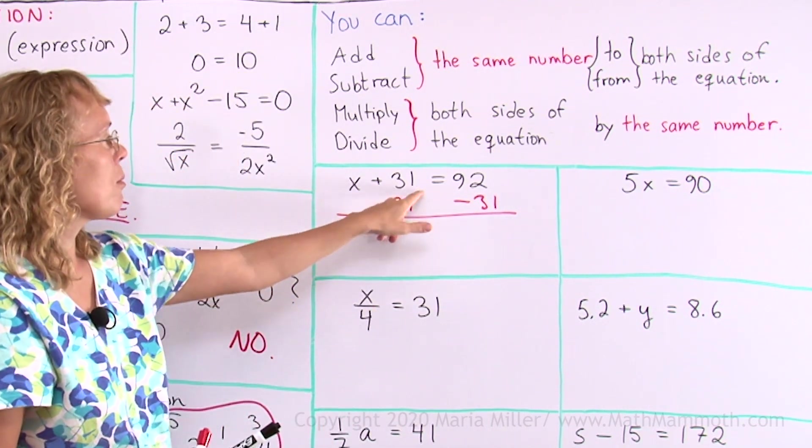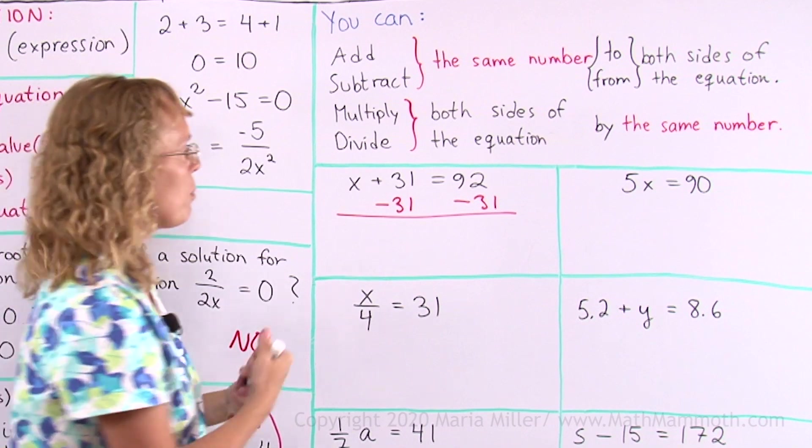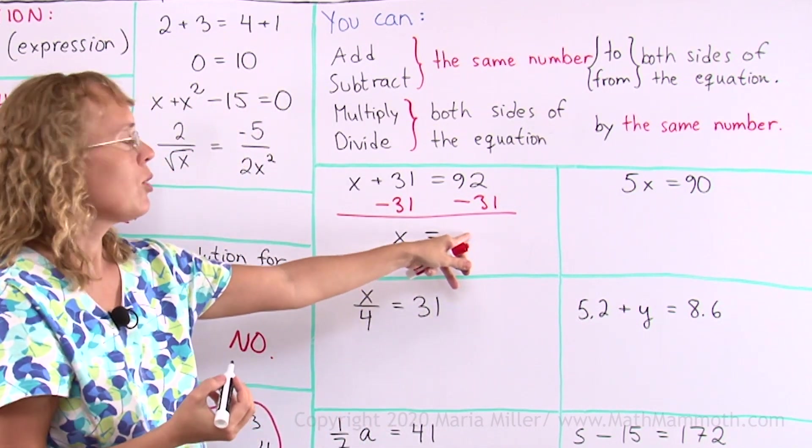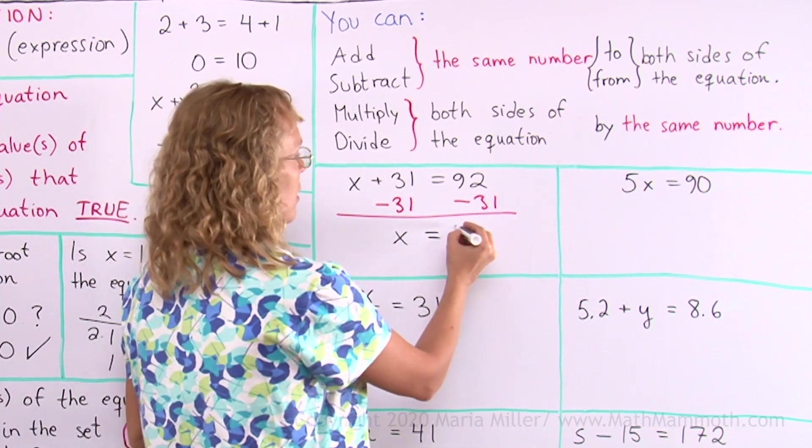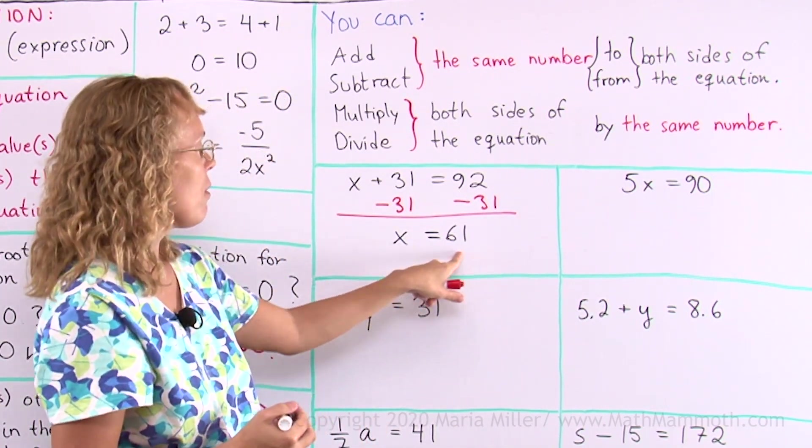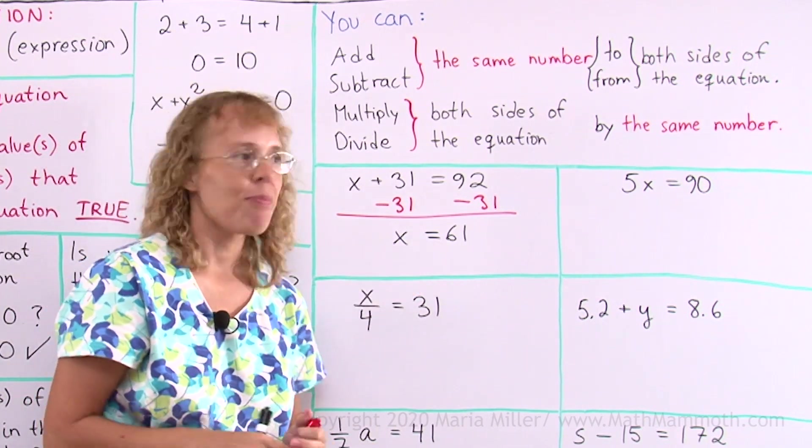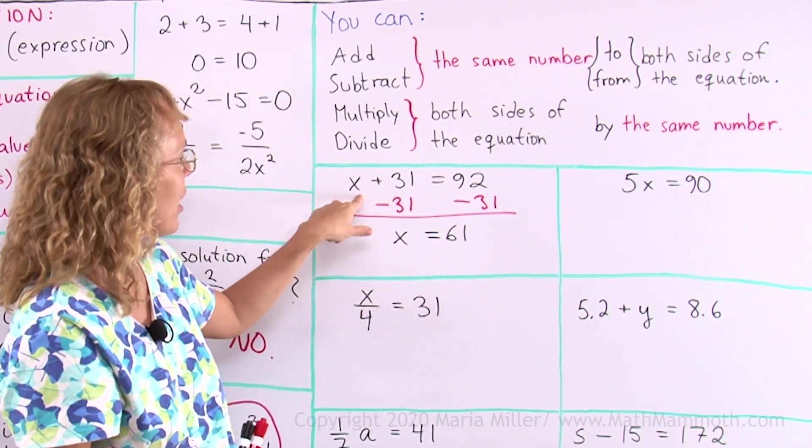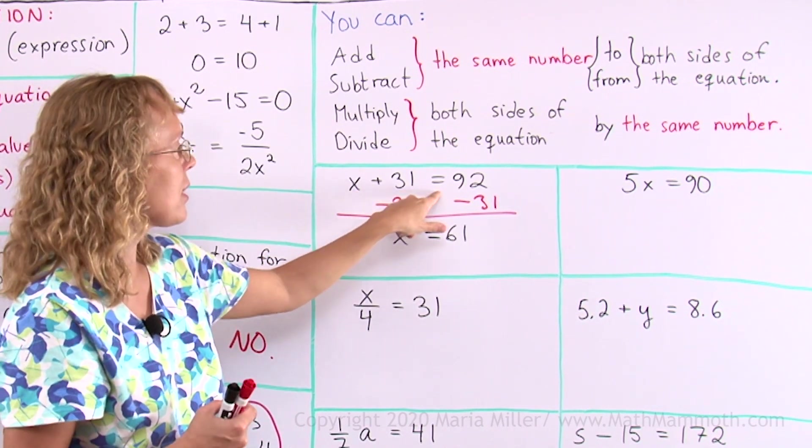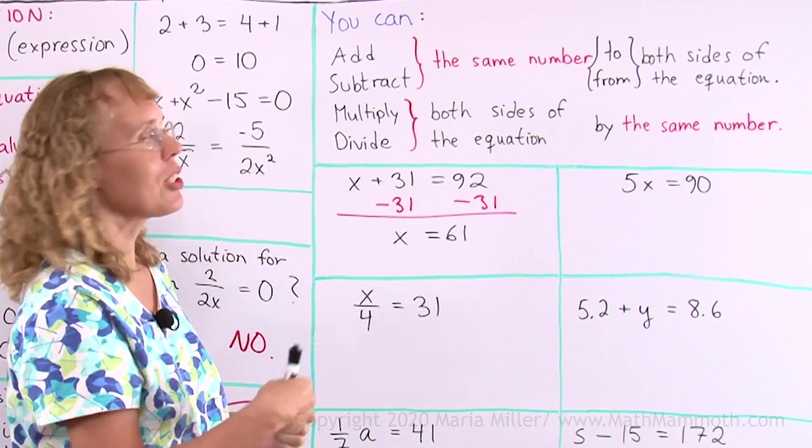Let's see what we get. On this side, x plus 31 minus 31 leaves x alone. On this side, I calculate 92 minus 31. So that is 61. That's solved it. After I have solved my equation, then I can check it by putting 61 in place of x in my original equation. 61 plus 31. Is it 92? Yes, it is. The equation checks.